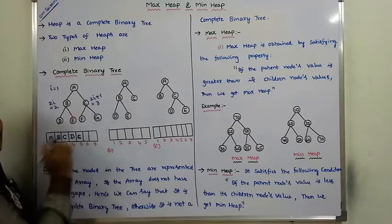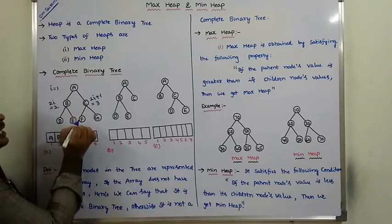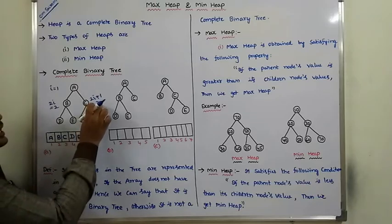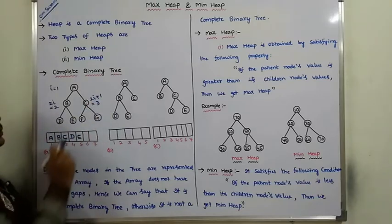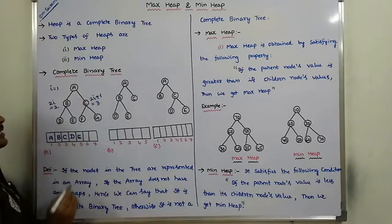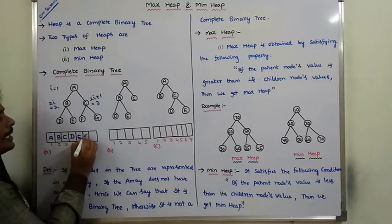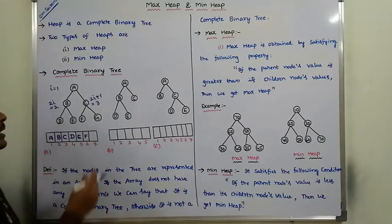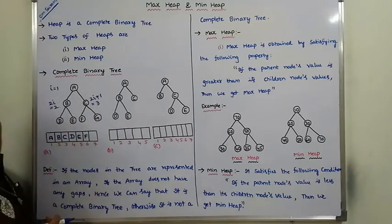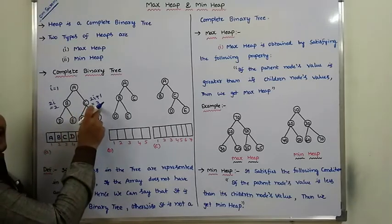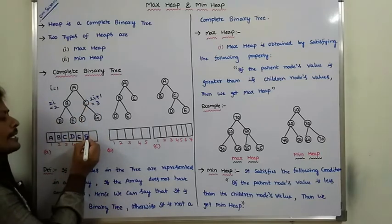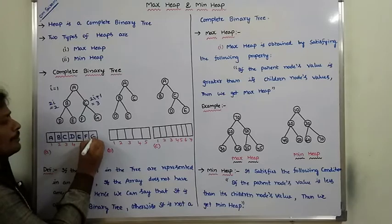C's left child is F. F is located at 2i position, where i value is 3. 2 into 3 equals 6, so F is located at index 6. And G is the right child of C, located at 2i plus 1. 2 into 3 plus 1 equals 7, so G is at index 7.